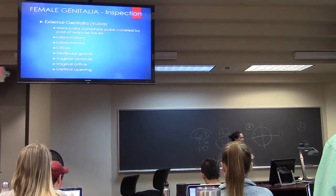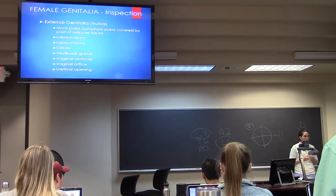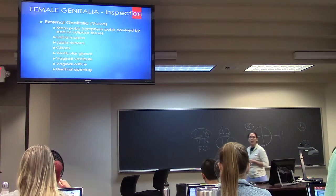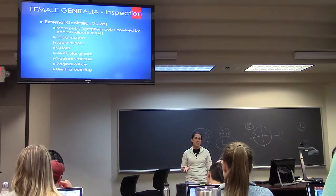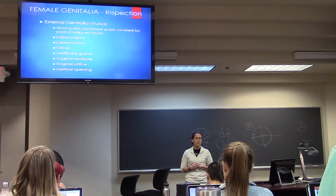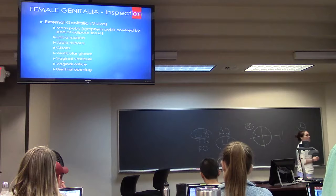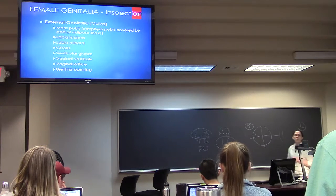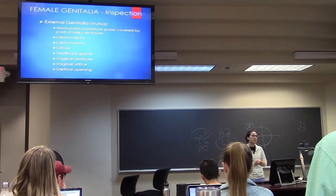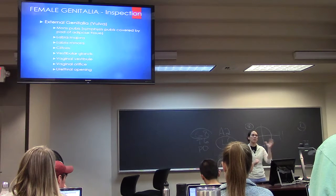These are all the components of the external genitalia that you need to look at and document: the mons pubis — which is your fat pad over the pubic symphysis, more pronounced in some than others — the labia majora, labia minora, the clitoris, vestibular glands, vaginal vestibule, vaginal orifice, and the urethral opening. Those are all the things that are external.